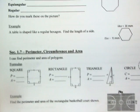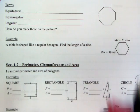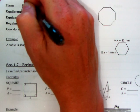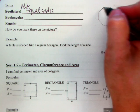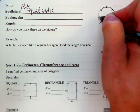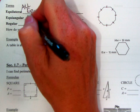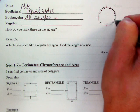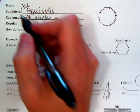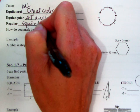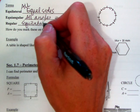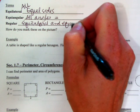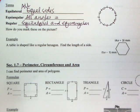A couple more terms we're going to be using a lot. Equilateral means all the sides are equal — you mark that with tick marks to show all sides are equal. Equiangular means all angles are equal — you mark that with little arcs to show all the angles are the same measure. Regular means it's both equilateral and equiangular — all sides and all angles are equal.